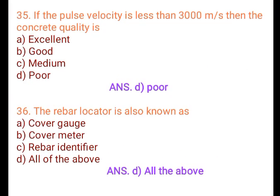Question 35: If the pulse velocity is less than 3000 meters per second, then the concrete quality is: A. Excellent, B. Good, C. Medium, D. Poor. Answer: D. Poor.